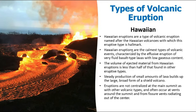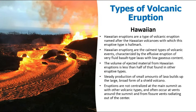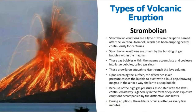The volume of ejected material from Hawaiian eruptions is less than half of other eruptions. A small amount of lava builds up around a large area, gets cooled, and creates material in and around the fracture. Eruptions are not centralized at a main summit — there is no central pipe; it basically happens along the fissure or fault.